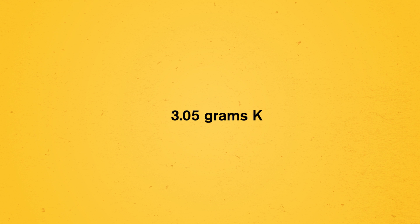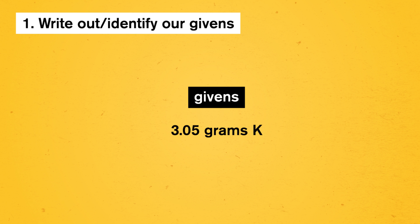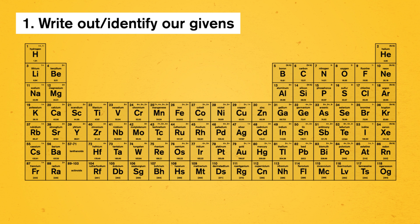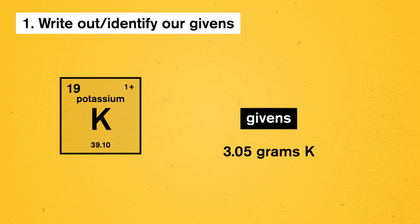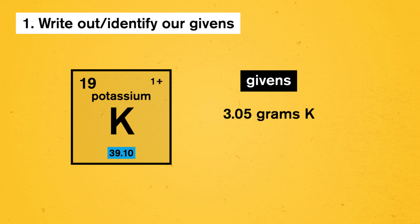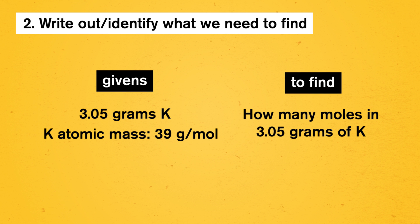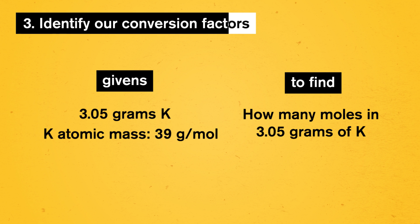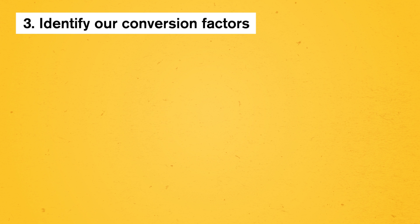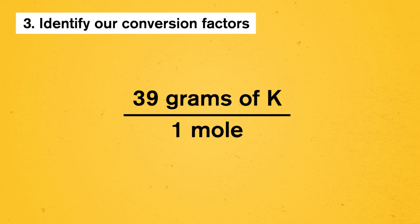There are five steps we can walk through for this process. Let's say we need to convert 3.05 grams of potassium to moles. First, let's start with our givens — we have 3.05 grams of potassium, and from the periodic table, the atomic mass of potassium is about 39 AMU. For simplicity, we'll be rounding our atomic masses to the nearest whole number in this series. Second, we need to write out what we need to find: how many moles of potassium are in 3.05 grams. Third, we identify our conversion factors — the molar mass of potassium, which has units in a ratio of grams per mole.